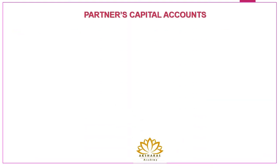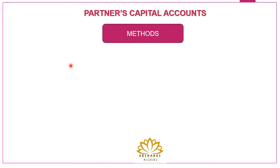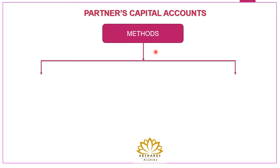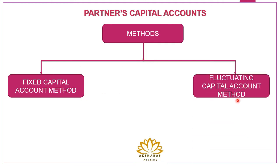Now let's see the meaning of partners capital accounts and the methods of preparing this partners capital account. In sole proprietorship there will be only one individual who will invest capital and run the business, so there will be only one capital account. Whereas in partnership there will be two or more partners, so for each and every partner separate capital accounts have to be prepared. Basically there are two methods of preparing capital accounts of partners.